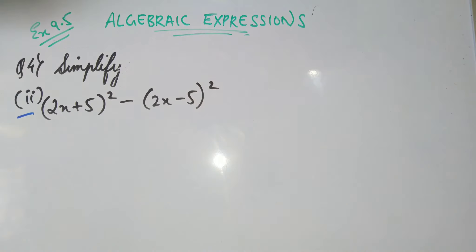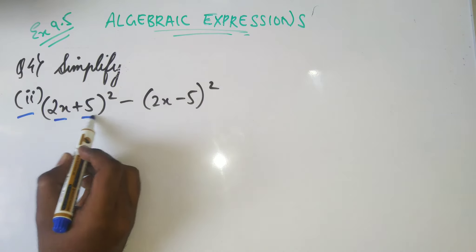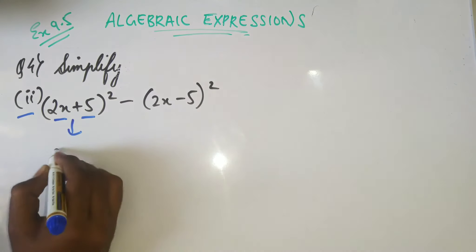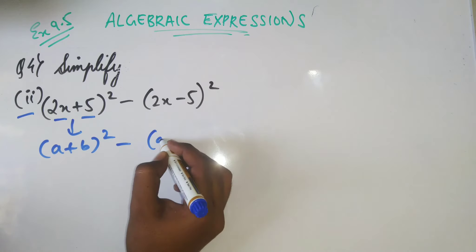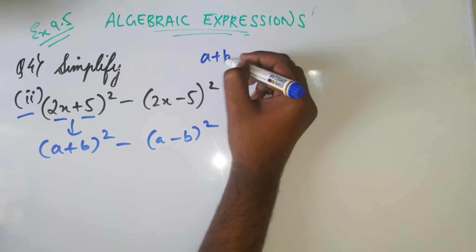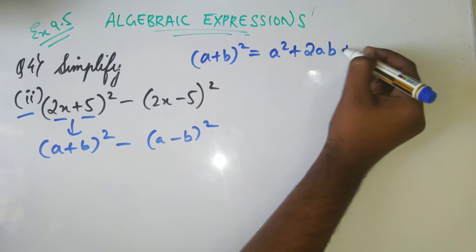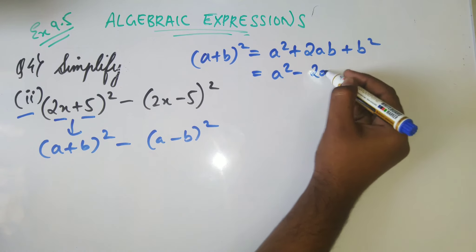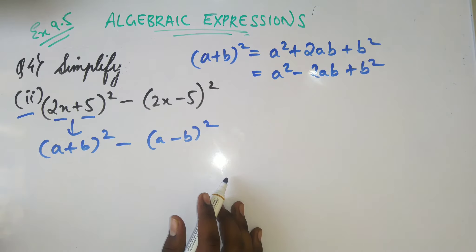Let us move on to the second part of the fourth question. The formula to apply here is (a + b)² - (a - b)². Let's write both identities: (a + b)² = a² + 2ab + b², and (a - b)² = a² - 2ab + b².